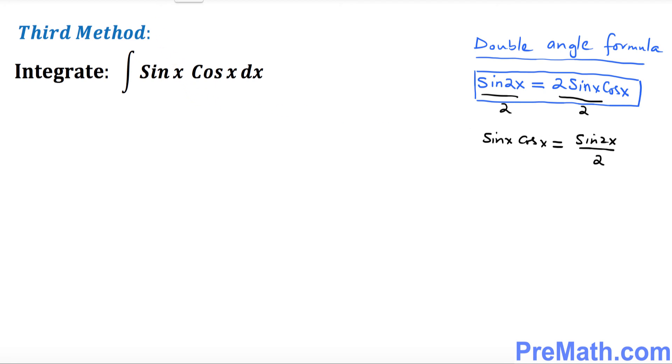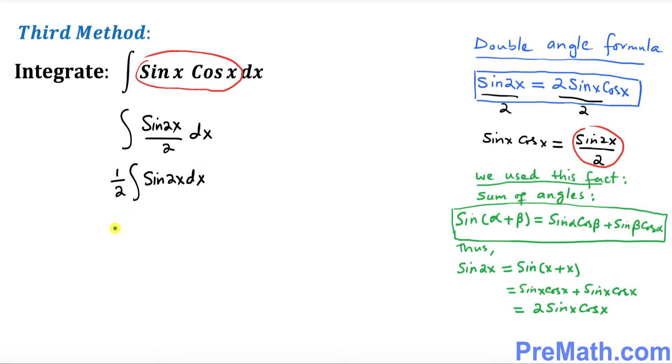So now we can replace this whole thing by this thing because they are equivalent. So I can write as sine of 2x divided by 2 times dx. Now I can put 1 over 2 outside and I can put down sine of 2x times dx. And then finally the next step is 1 over 2. We know the integral of sine is simply negative cosine of 2x and the derivative of 2x is 2. You're going to divide it by 2 plus c.